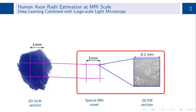The biophysical models of the MR signal used for in vivo axon radius assessment using MRI have often been validated on 2D electron microscopy images, which cover only a small fraction of the cross-sectional area of a typical MRI voxel of 1 mm edge length.